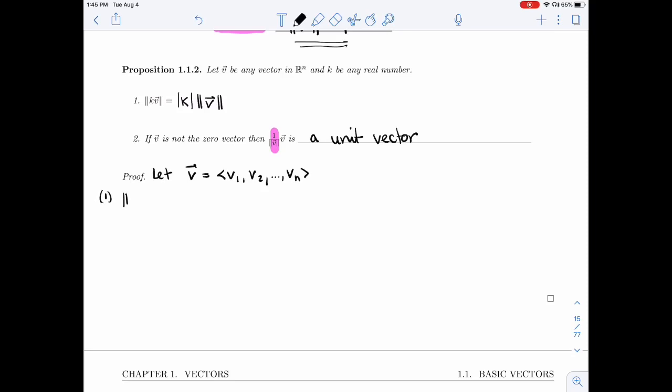Then the length of KV, that would be the length of, well, same vector, but I multiply each of the entries by K. And so that K is all over the place. And when I write my definition of what the length of this vector is, I'm going to have a K in each of the components.